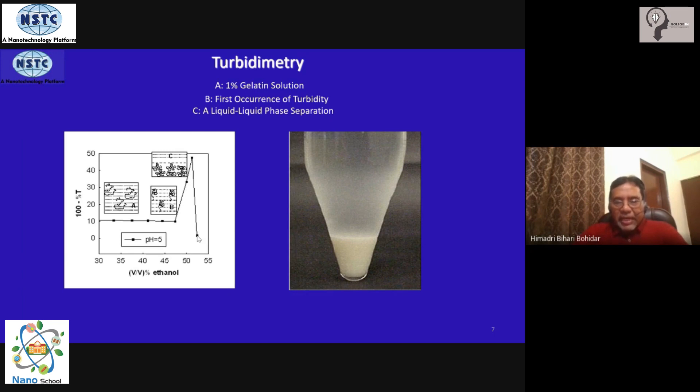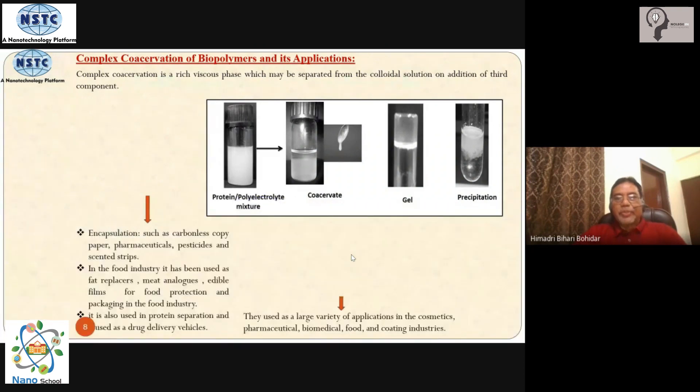Therefore I repeat, the control has to be very systematic. You do a titration in a very systematic manner to drive the homogeneous one phase solution to a two phase liquid-liquid phase separation. This is liquid one, this is liquid two. Low concentration of biopolymers, high concentration of biopolymers, high density. So you have two materials now ready with you. Now this strategy has been utilized very extensively for the preparation of nanoparticles.